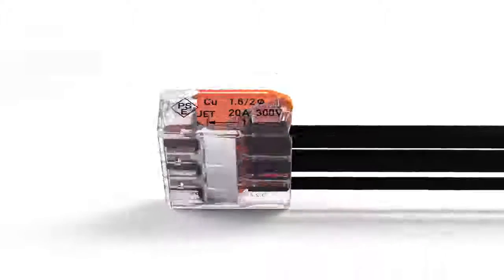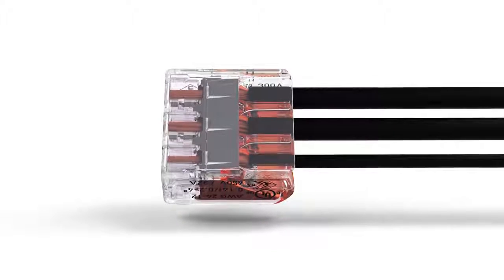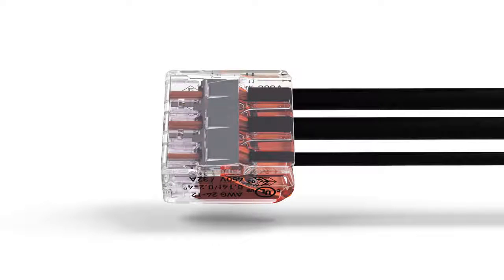The transparent housing enables visual inspection of the correct conductor position, providing a clear view of conductors that have not been inserted far enough or that have not been stripped to the proper length.